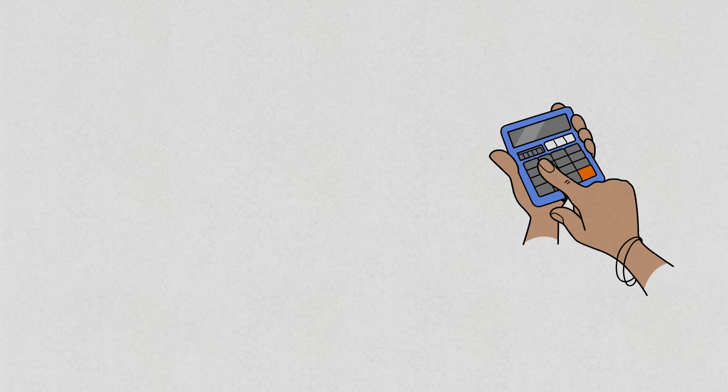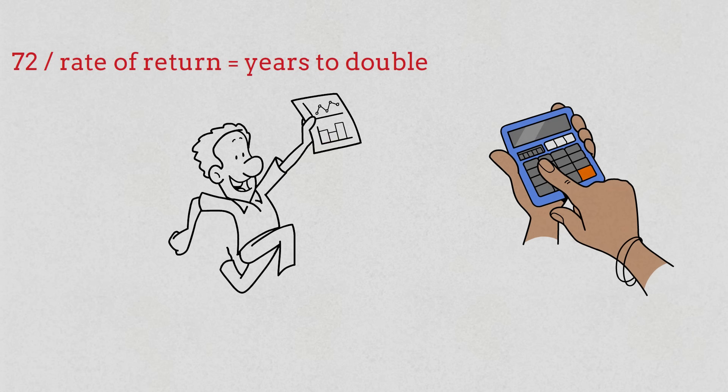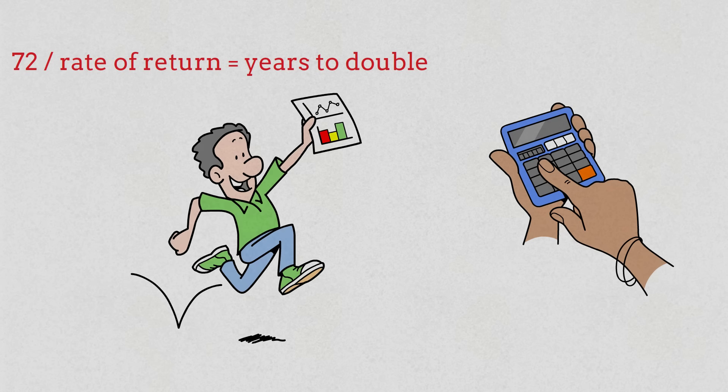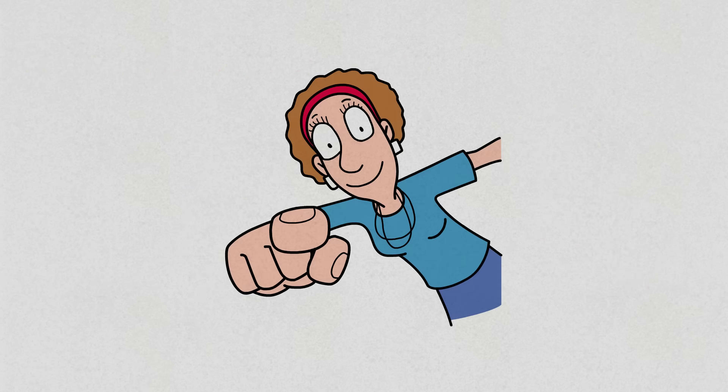With the Rule of 72, you can instantly see how fast your money could double. Just plug in your expected rate of return, and suddenly you know the timeline for your investments to start growing in leaps. You might actually find that your portfolio doubles quicker than the formula suggests. So what's your target rate of return, and how fast do you think your money will double?